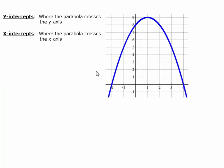Here we have our last two vocabulary words: x intercepts and y intercepts. The y intercept is where the graph crosses the Y axis. You'll notice the parabola crosses through the Y axis at the point (0, 8) because x is zero and y is eight. The x intercepts are where the graph crosses the X axis — they cross at negative two with a y value of zero, and at four with a y value of zero as well.